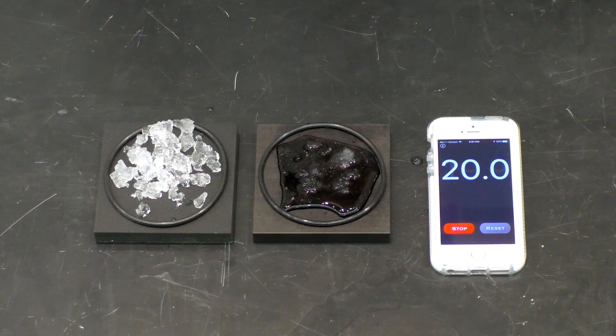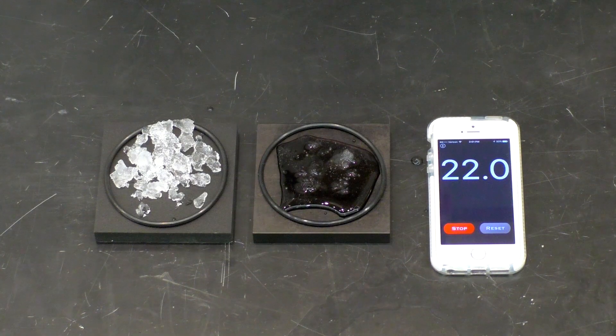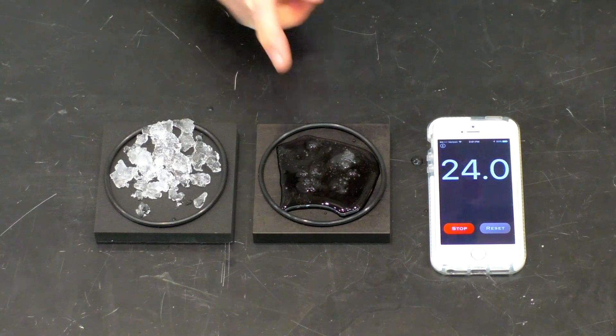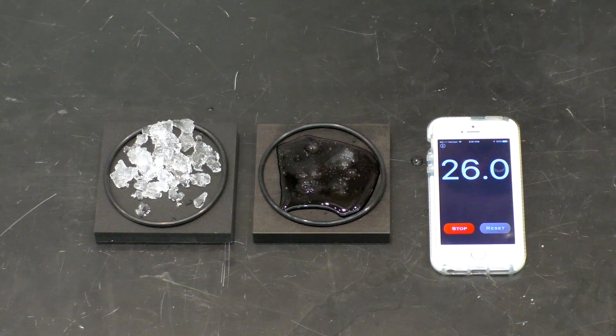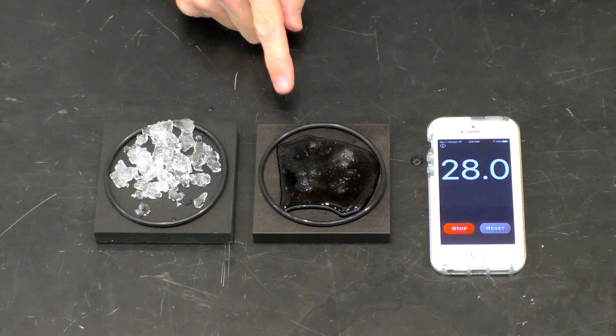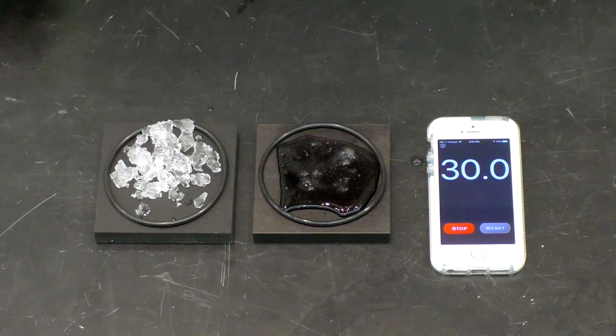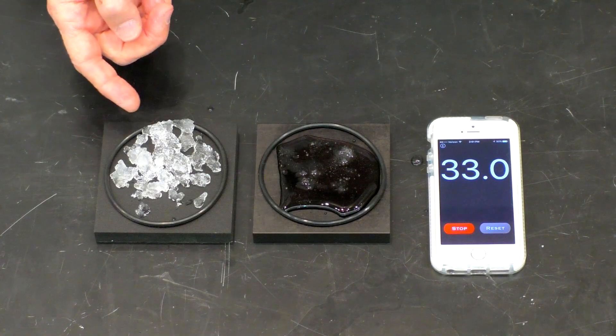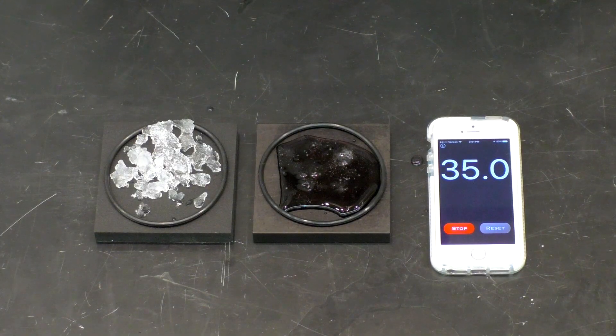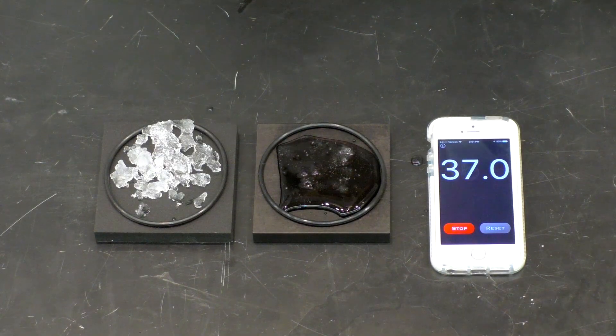So as you can see, in maybe 20 seconds of time, the ice has melted that's on top of this material here. And the ice has hardly started to melt on top of the other block. What's the difference?